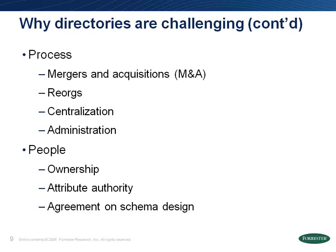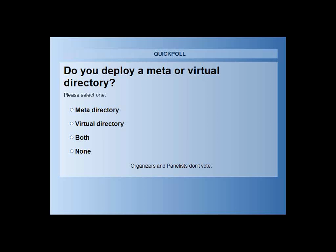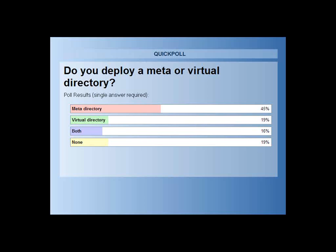With that, let's see in the polling who's using what kinds of directories. The results show that 45% of people use meta-directories, 19% use virtual directories, 16% use both, and 19% don't use any of them.